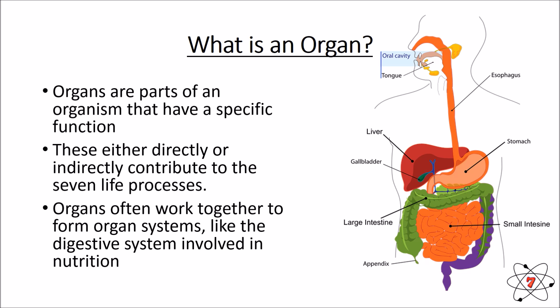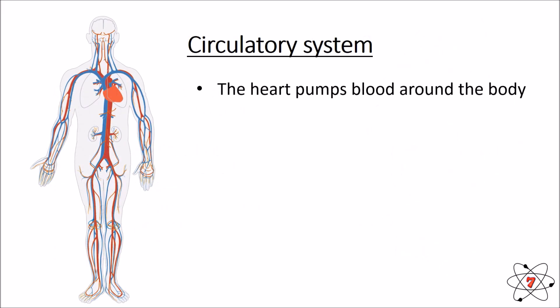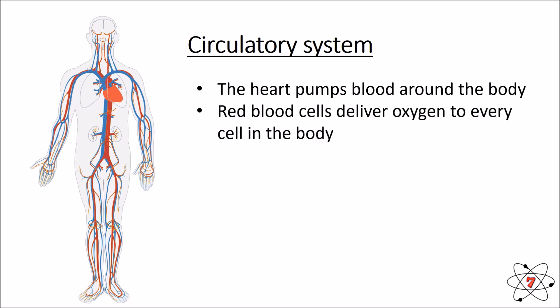Looking at the circulatory system: the heart pumps blood around our body, moving blood to all the other organs and all of your muscles. The red blood cells deliver oxygen to every cell in the body.